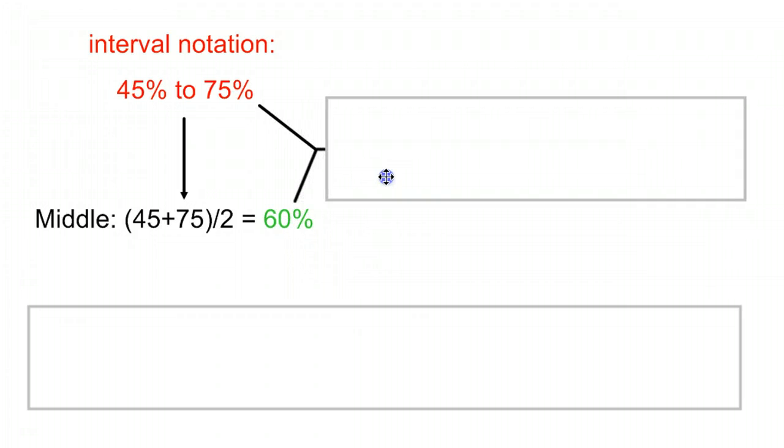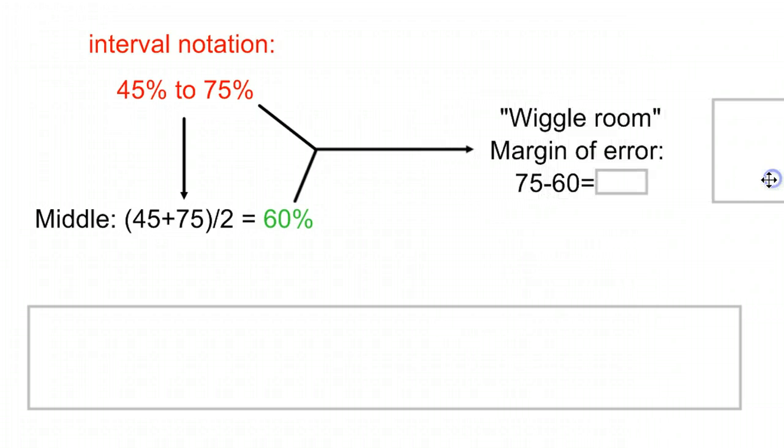Then, you have to figure out how far you go in either direction. And that's your margin of error. I like to also call it the wiggle room. Your margin of error is what it's technically referred to. How much wiggle room do you have on either side?